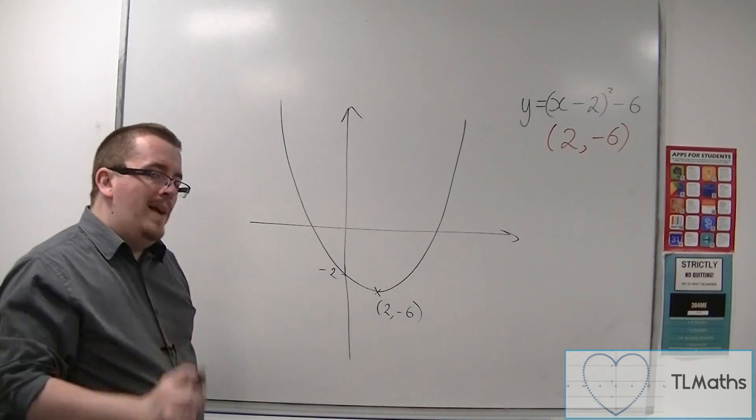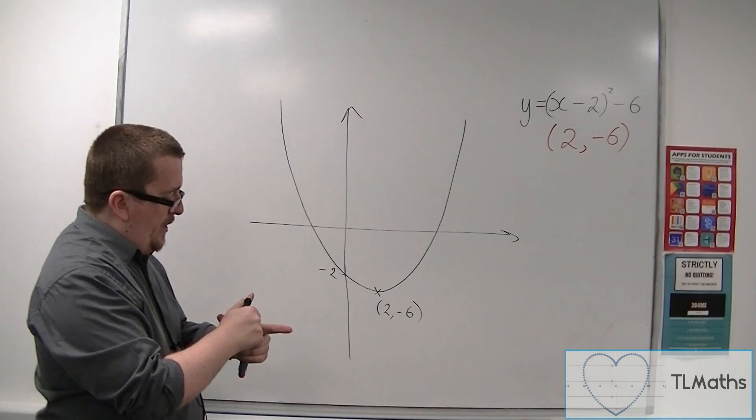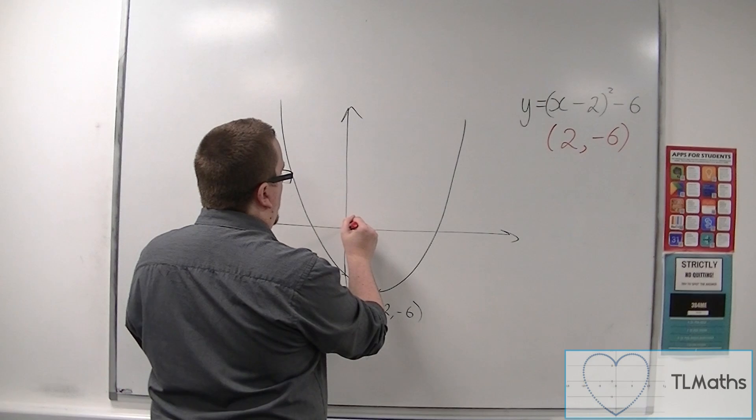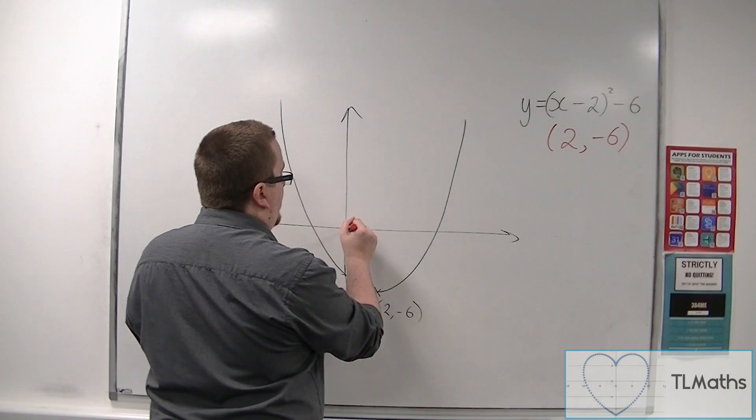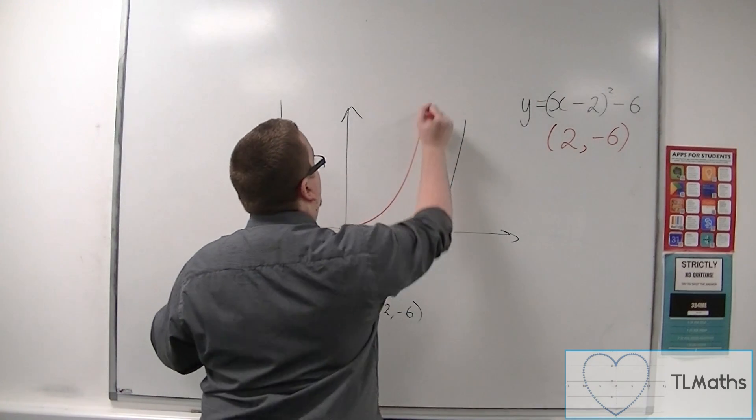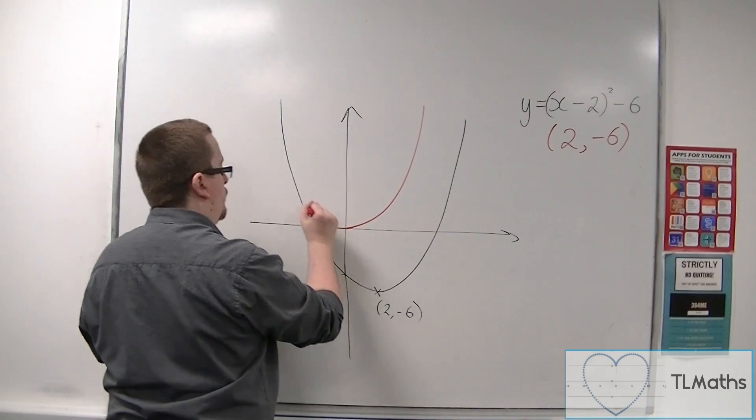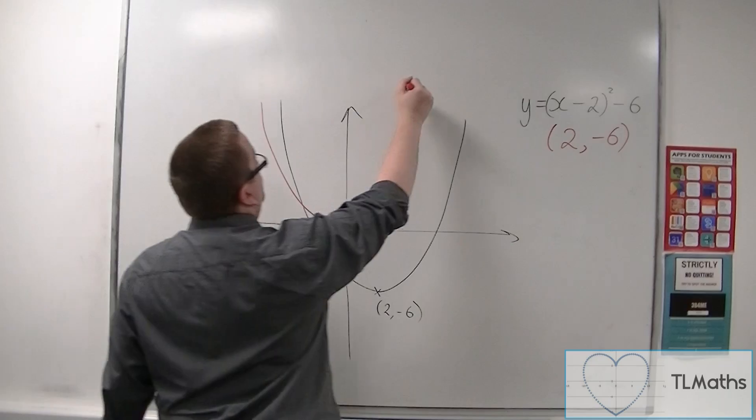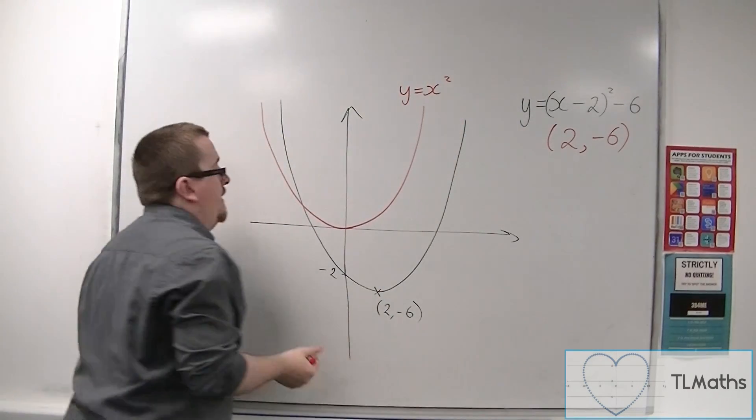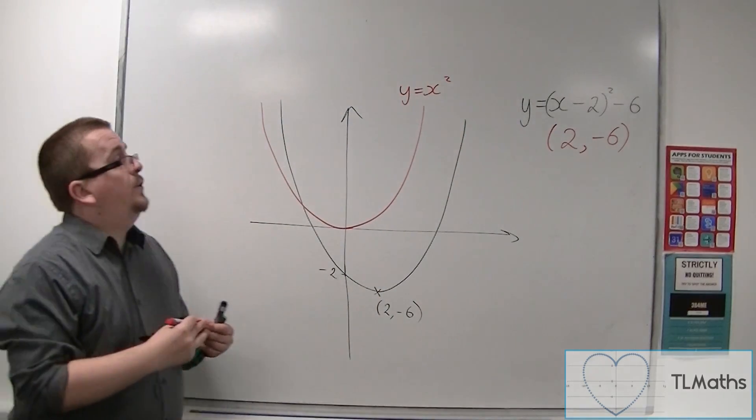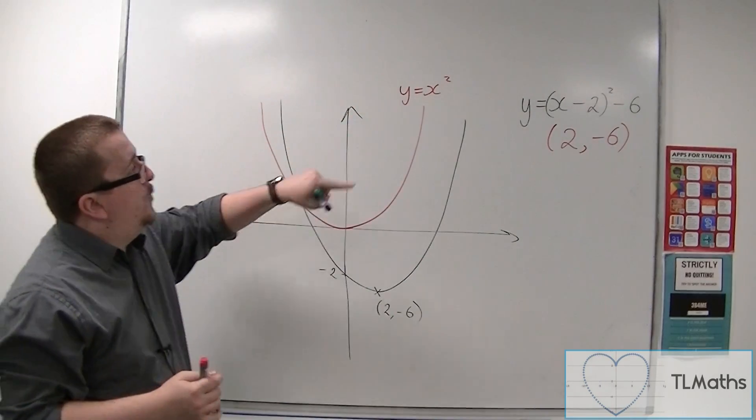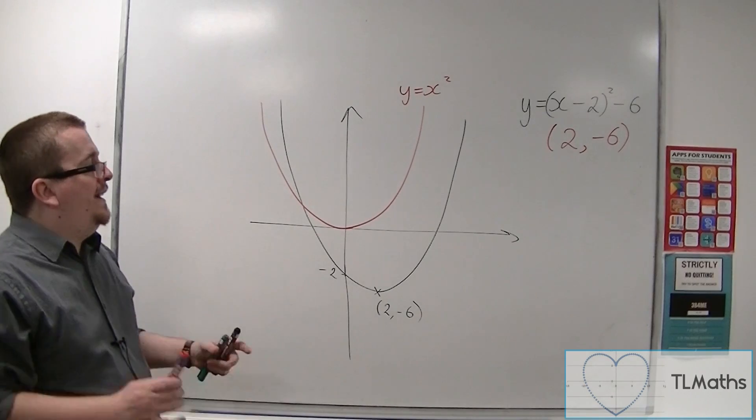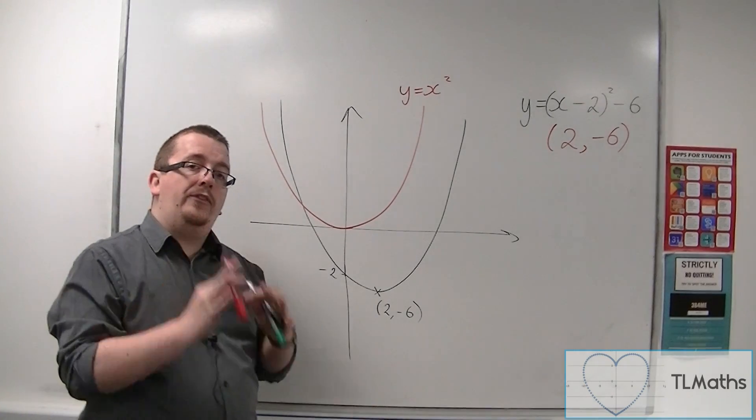So what I want to compare this to is the curve y equals x squared. Now y equals x squared has its vertex at the origin and would look something like this. Now y equals x squared and y equals x minus 2 squared take away 6 actually have exactly the same shape.